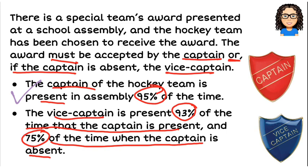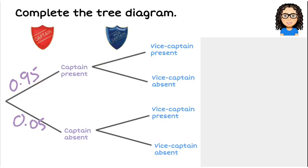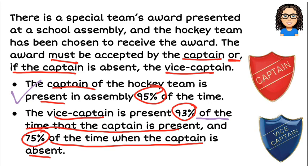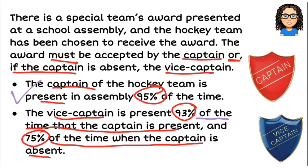The next percentage we've got is 93%. It says the vice captain is present 93% of the time the captain is present. So that 93% is going to go on that branch for the vice captain, which means 93% of the time they're present and 7% of the time, or 0.07, they are absent.